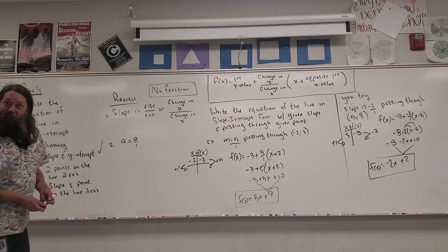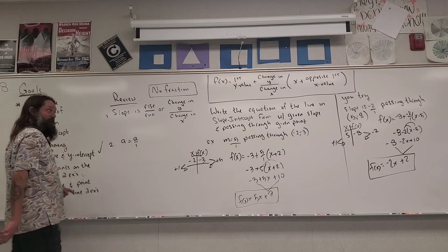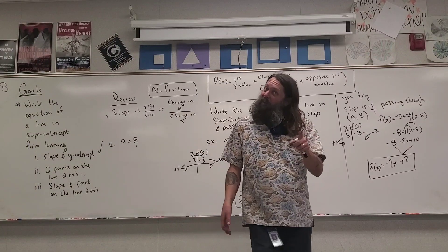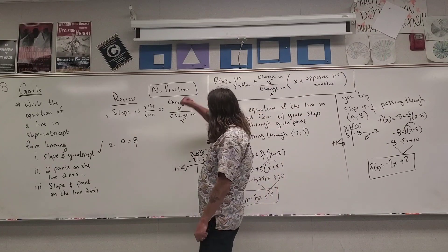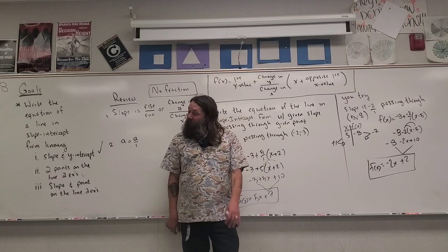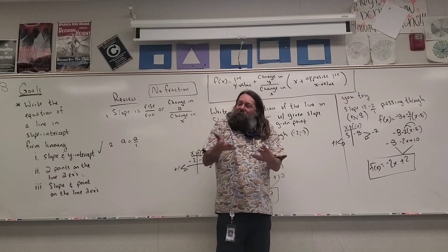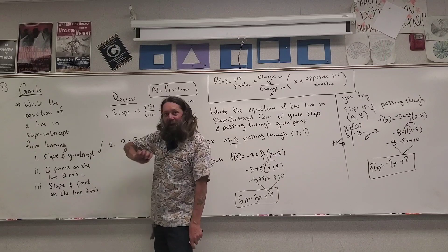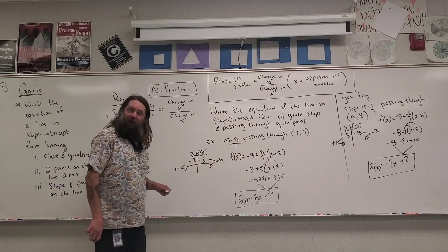There's one more type to do: knowing the slope and a point, but this time the slope is a fractional number. You can probably already figure out what we're going to do because it's really just a repeat of the fraction elimination process from before.